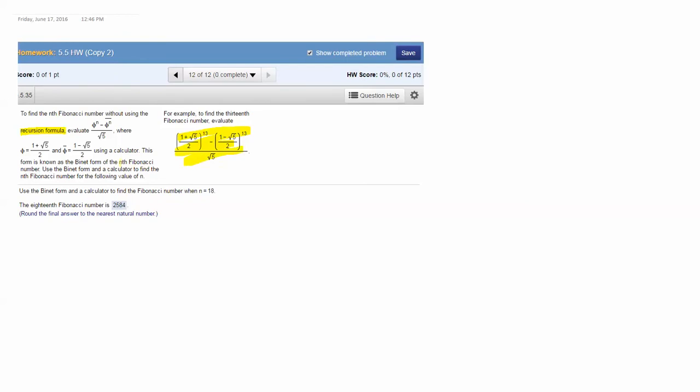It involves the golden ratio, which is really interesting. This formula is called the Binet form of the nth Fibonacci number. You have to use a calculator and really the only thing that's hard about this is that it's a little tricky to type into some calculators.